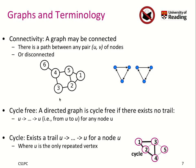Next, we can talk a little bit about connectivity. A graph may be connected, which means there is a path between any pair of nodes. So in this case, from any node, from node 1, I can reach node 6, node 2, 3, 4, and 5. And from any other node, I can reach any other node.